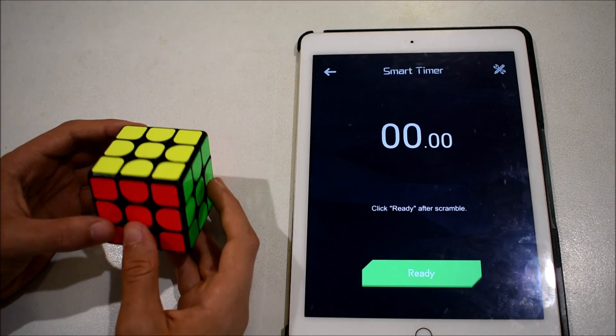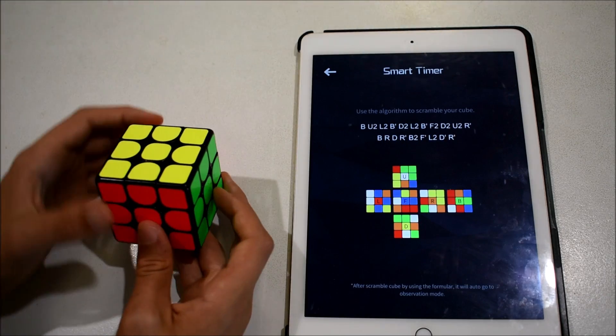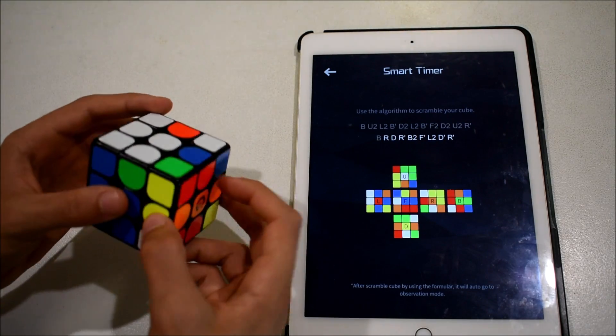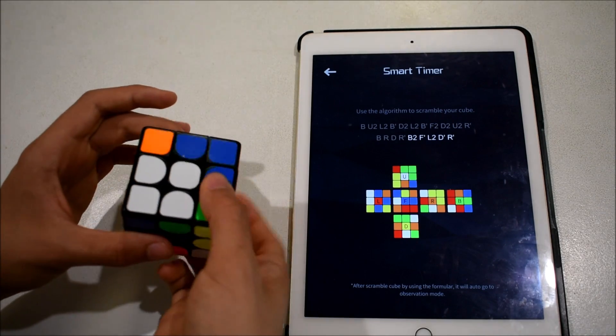On this page, you can either scramble the cube yourself or get given a scramble. The only problem with using the scramble they give is that for the double turns, you have to do them clockwise and not anti-clockwise or it won't let you continue on with the scramble. Not a big issue but just a bit annoying.